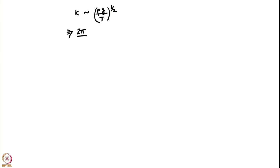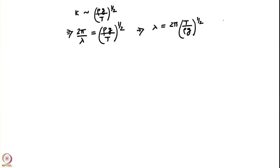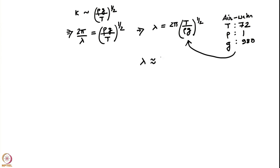If we compute the lambda corresponding to that k: since k = 2π/λ, we get λ = 2π(t/ρg)^(1/2). Plugging in air-water values — surface tension t ≈ 72 (CGS units), ρ = 1 for water, and g = 980 CGS — you will find that λ is approximately 17 millimeters.